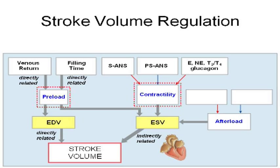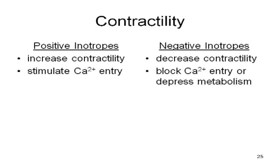Now, contractility — we're looking at it from the stroke volume side as opposed to the heart rate side. Anything that stimulates or increases the force of contraction is called a positive inotrope. These work by increasing the amount of calcium that goes in. Cardiac muscle contracts using the same mechanism as skeletal muscle — calcium binds to troponin, tropomyosin moves, and the more calcium that gets into the cell, the more active sites are exposed and the more cross-bridges are formed. Your body generates positive inotropes, but not negative inotropes — though some drugs used to treat cardiac arrhythmias are negative inotropes.